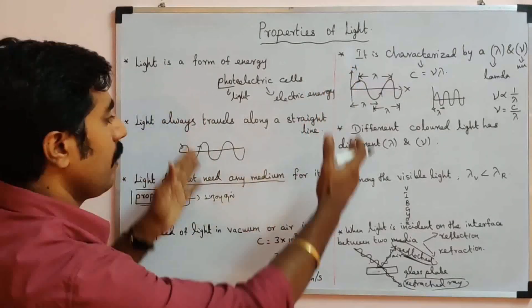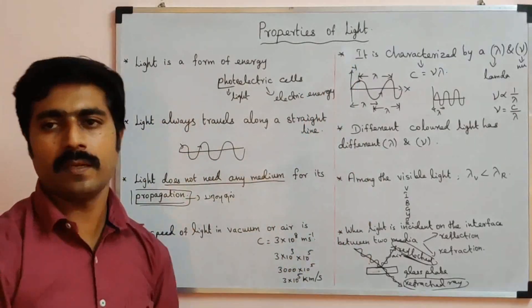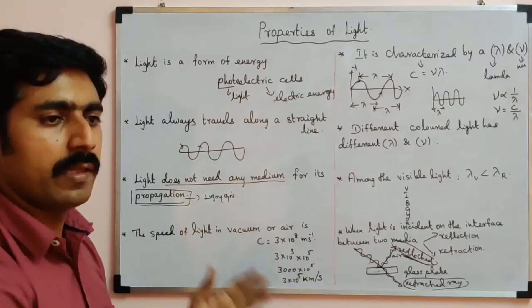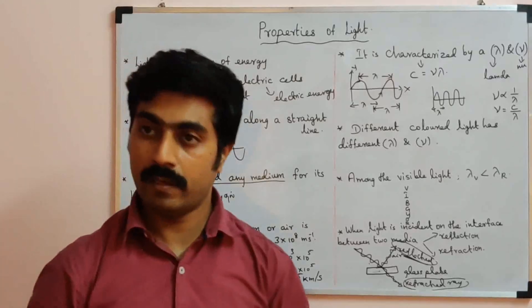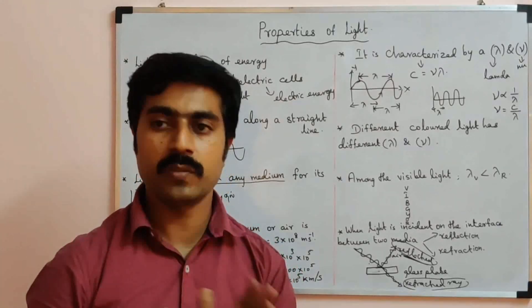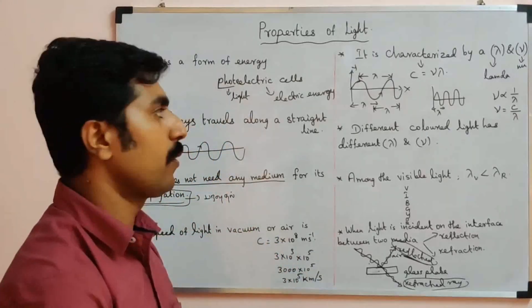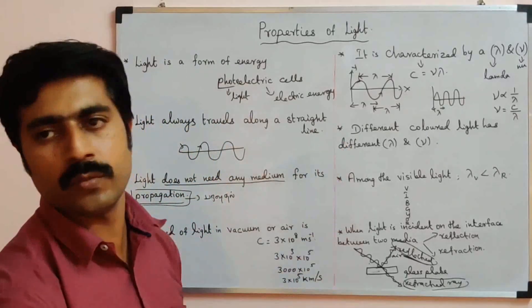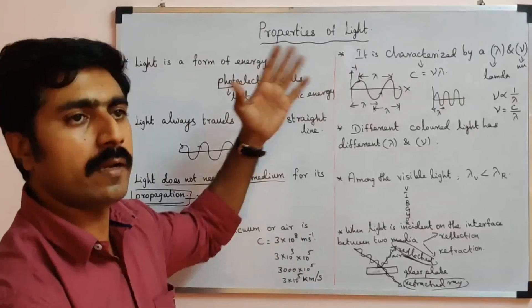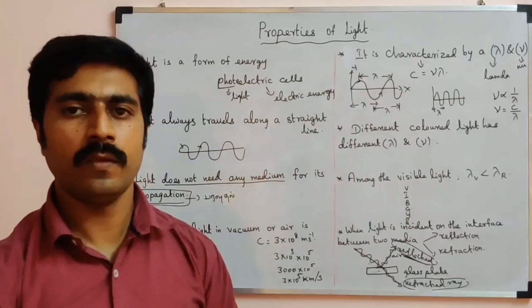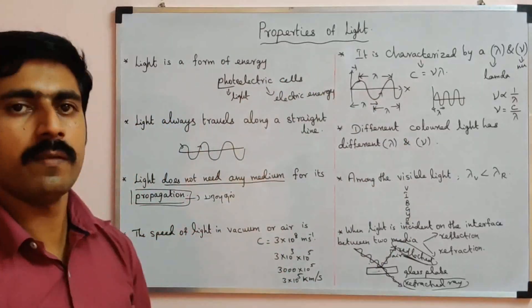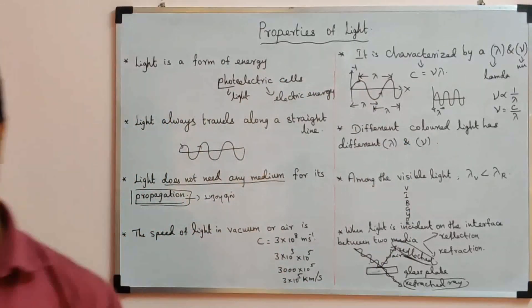When light hits the surface at the interface, it is split into two rays: one is the reflected ray. If you have any questions about these properties, you can refer to higher class concepts for more detail. Thank you.